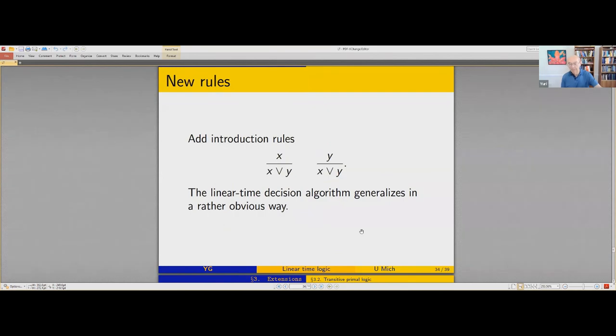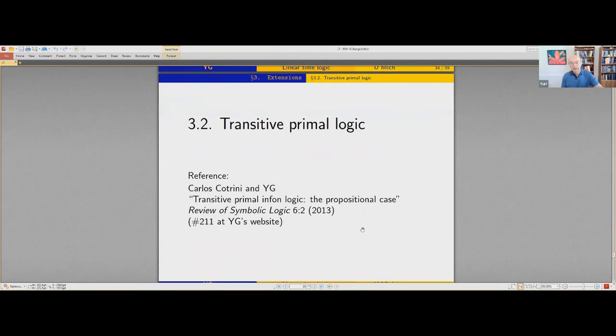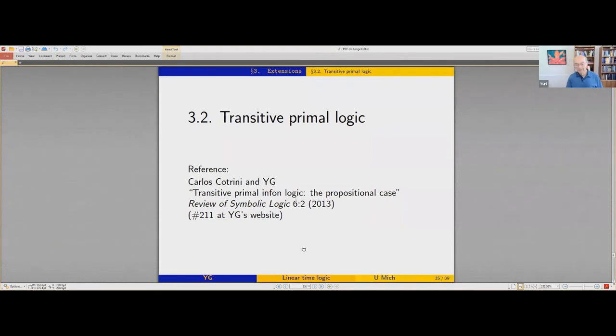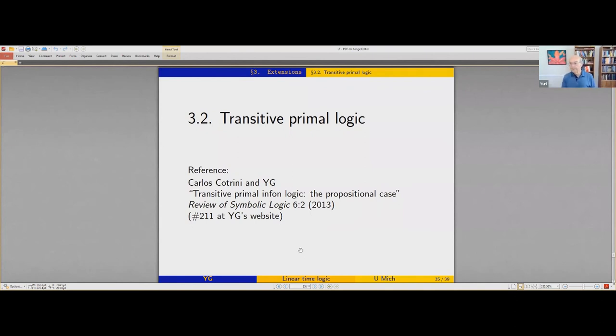For disjunction, we use very trivial rules. But it was sufficient for the purpose. More interesting: this was rather easy technically. More difficult extension was related to this work with Carlos Catrini. By the way, now he's a graduate student at ETH Zurich. Actually, I don't know, maybe he's already finished. Last time I talked to him, he was still a graduate student at Zurich. So here we added a rule. If A implies B and B implies C, in basic logic it doesn't mean that A implies C. So adding transitivity is not trivial.